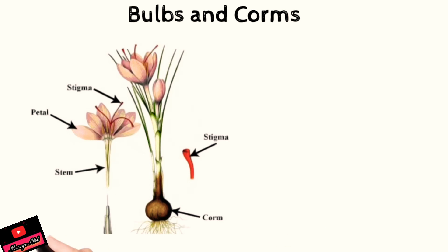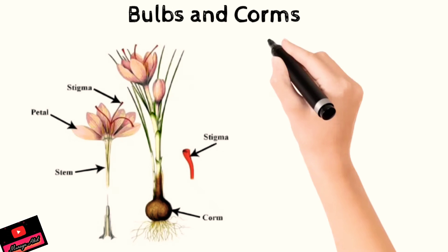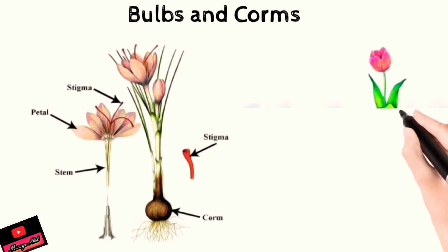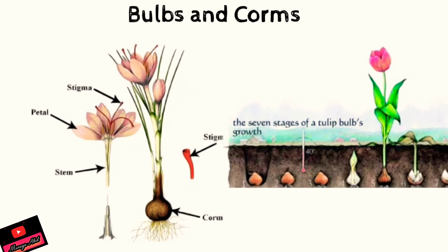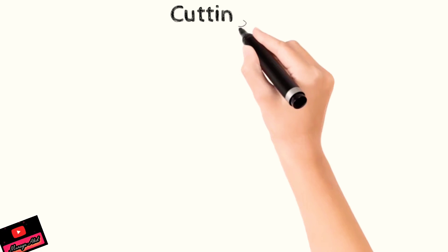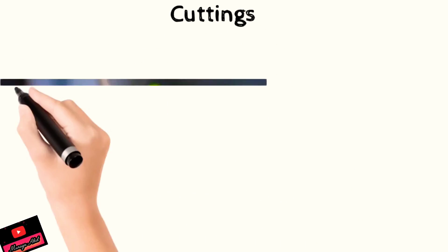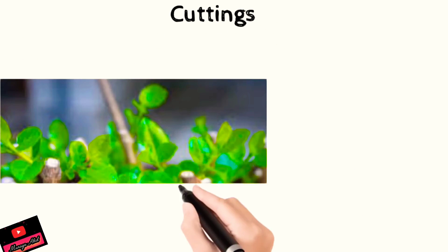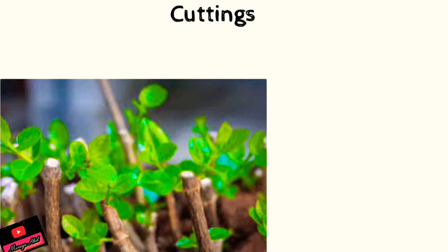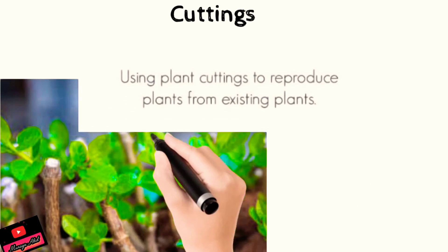Bulbs or corms include onion, garlic, crocus, arvi, kachalu, and tulip. These bulbs have stored food and grow into new plants. Cuttings — you must have known this — cuttings of some plants like rose, apple, or other plants can grow individually into new plants using plant cuttings to reproduce from existing plants.